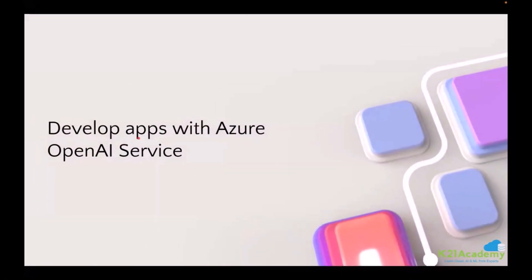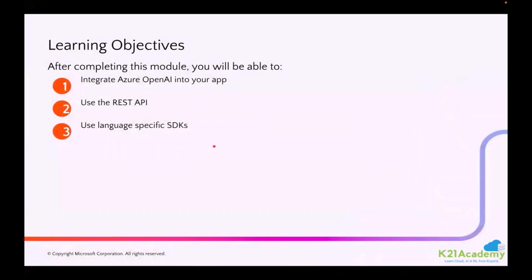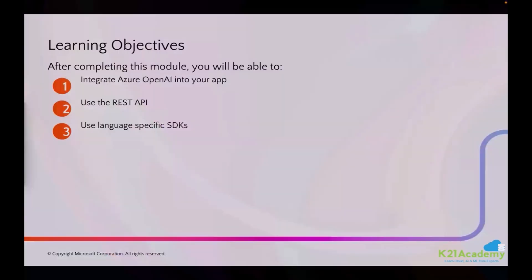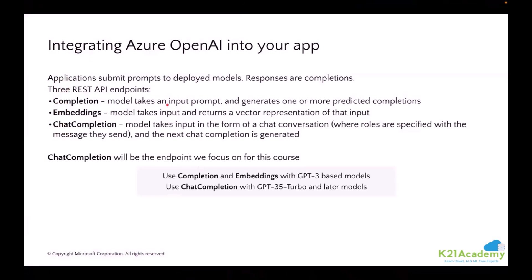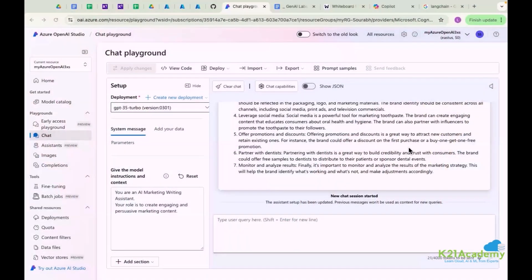Next we are going to talk about developing apps with Azure OpenAI services. In this lesson we will talk about how you can integrate these applications with your own application. We had discussed three main types: chat, completion, and embeddings, but right now we will do a little more practical thing.